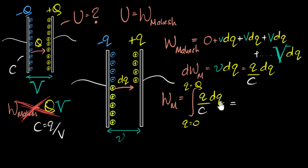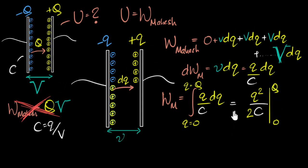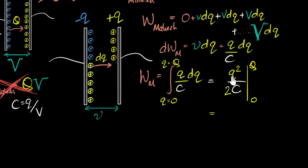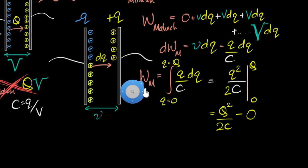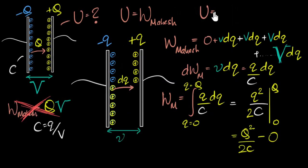Since we're integrating Q with respect to DQ, we use the integral formula: the integral of X to the power N is X to the N+1 divided by N+1. Keeping the denominator C, we get Q squared divided by 2C. Applying limits from zero to capital Q, we get Q squared over 2C minus zero. Therefore, the total energy stored in a capacitor is Q squared divided by 2C.